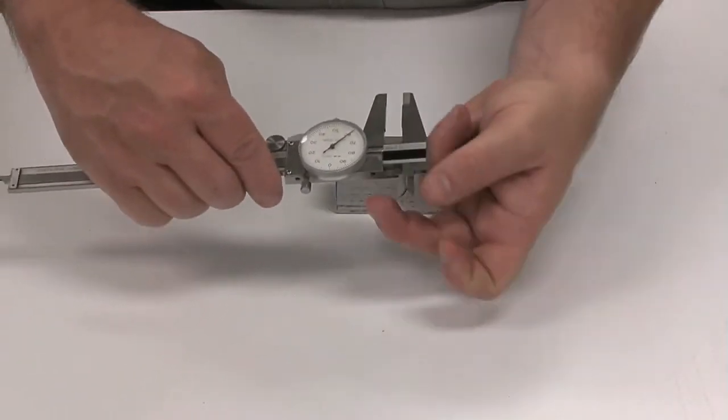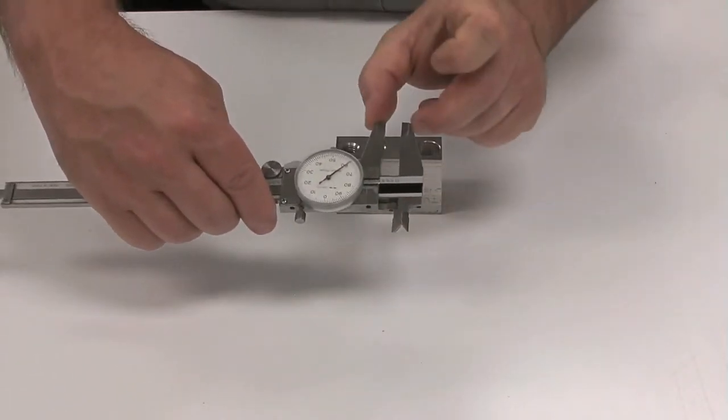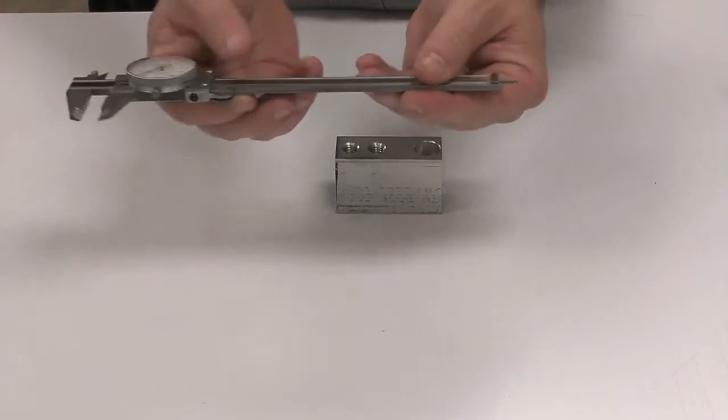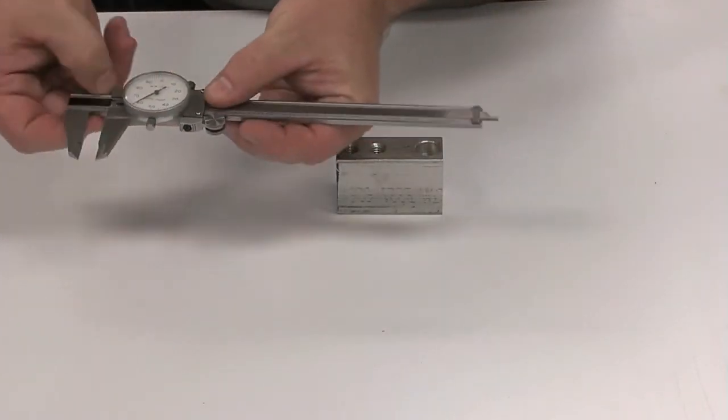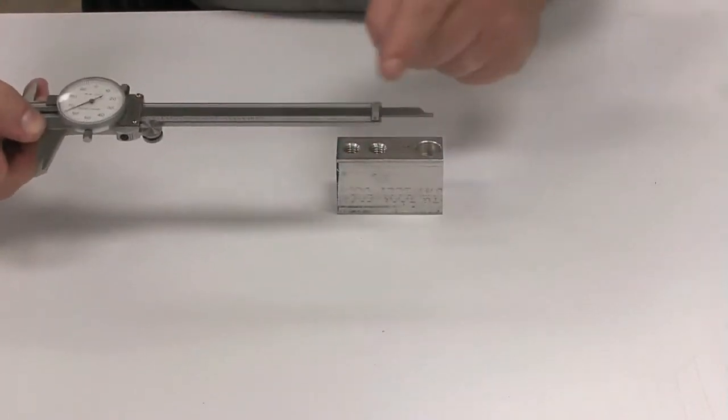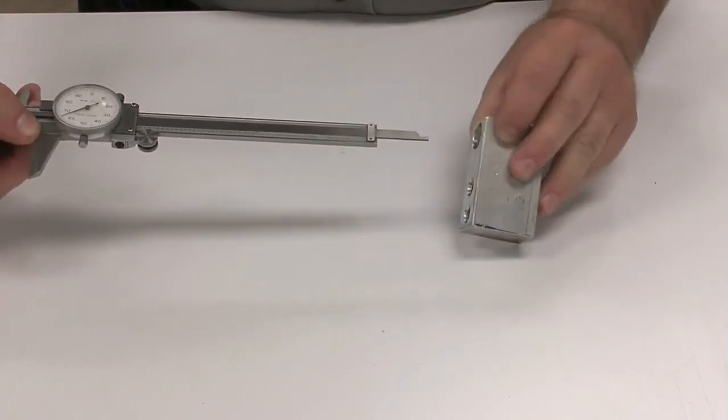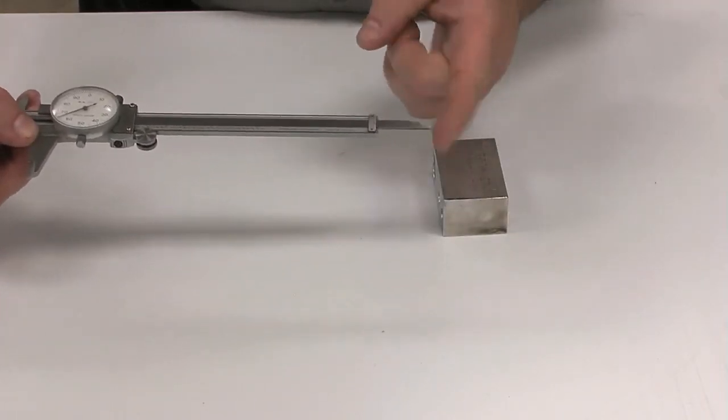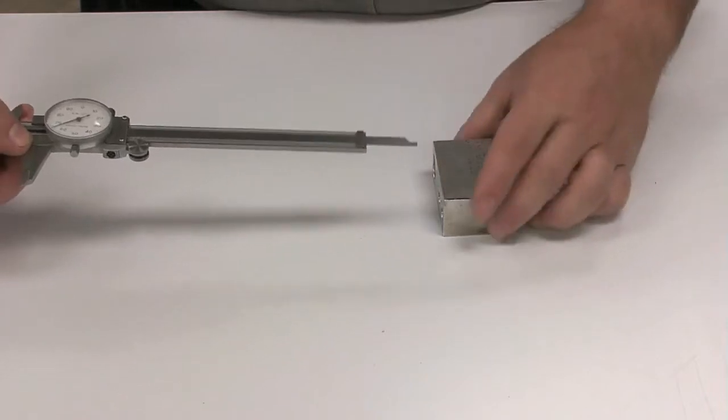In addition to inside and outside dimensions, this is also equipped with a depth indicator. That's this bar off the end, which is used from the tip of this bar to this shoulder here.